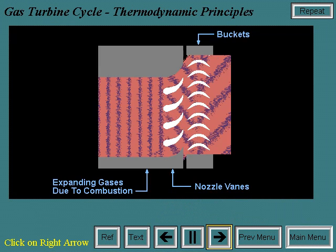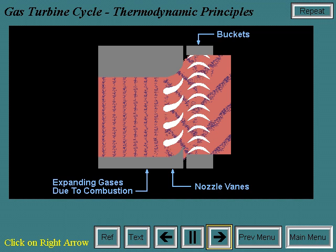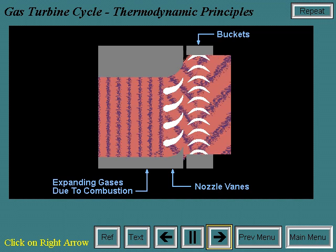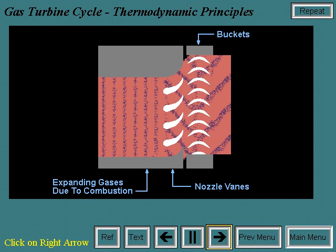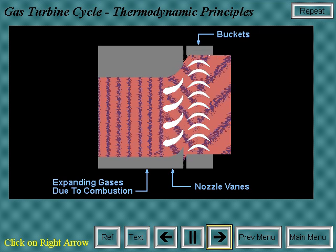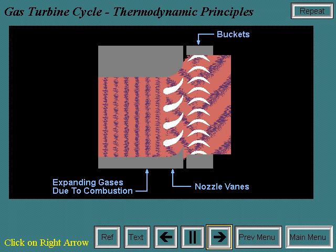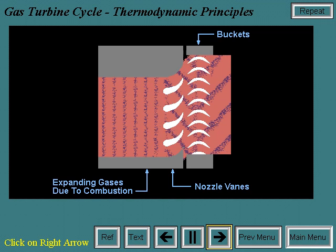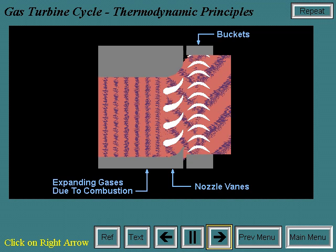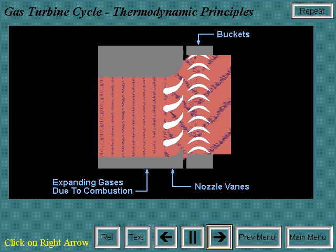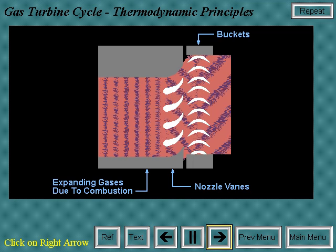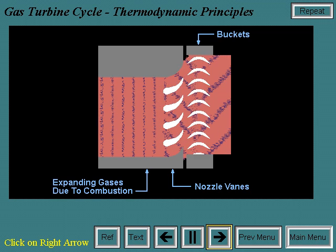The conversion of work in the turbine actually takes place in two steps. In the nozzle section of the turbine, the hot gases are expanded, and a portion of the thermal energy is converted into kinetic energy. In the subsequent bucket section of the turbine, a portion of the kinetic energy is transferred to the rotating buckets and converted to work. Typically, more than 50% of the work developed by the turbine section is used to power the axial flow compressor.